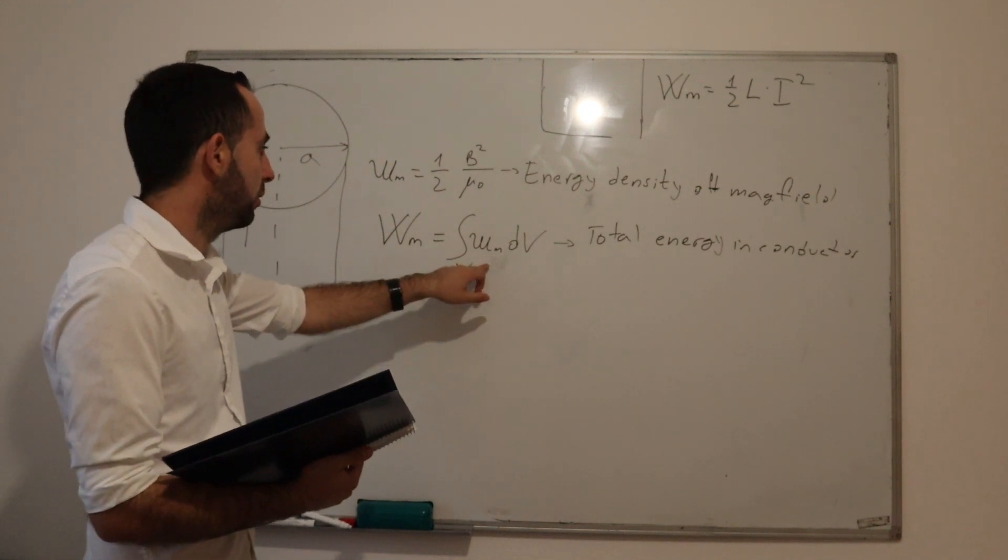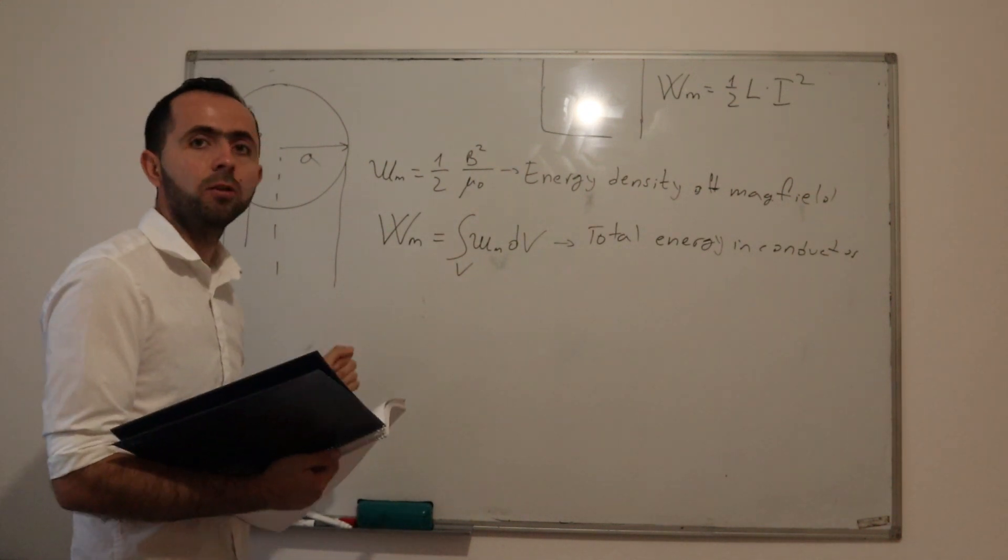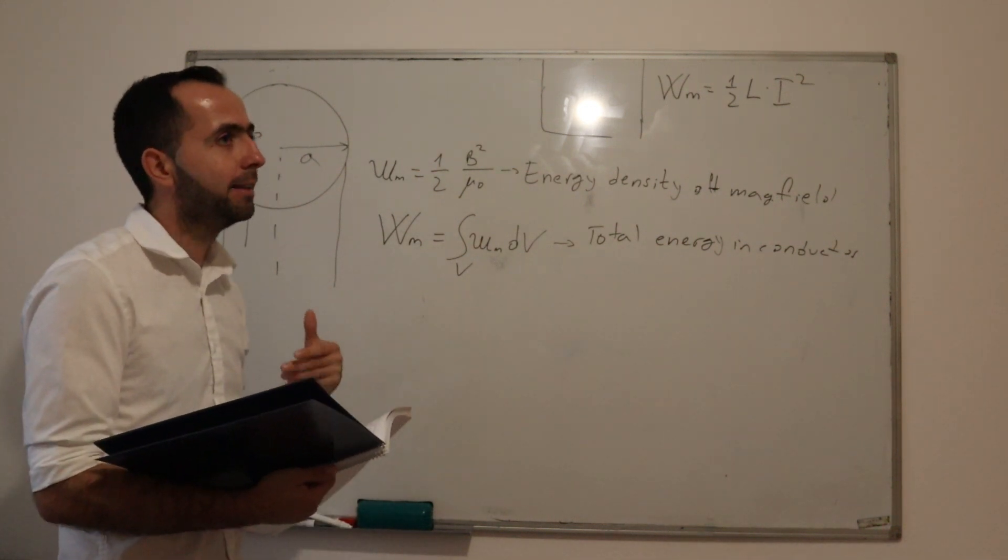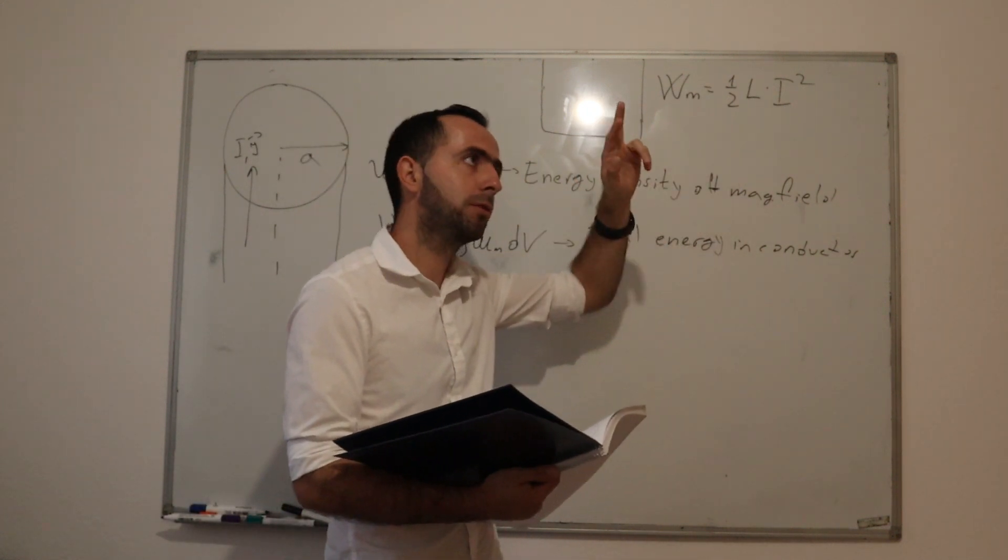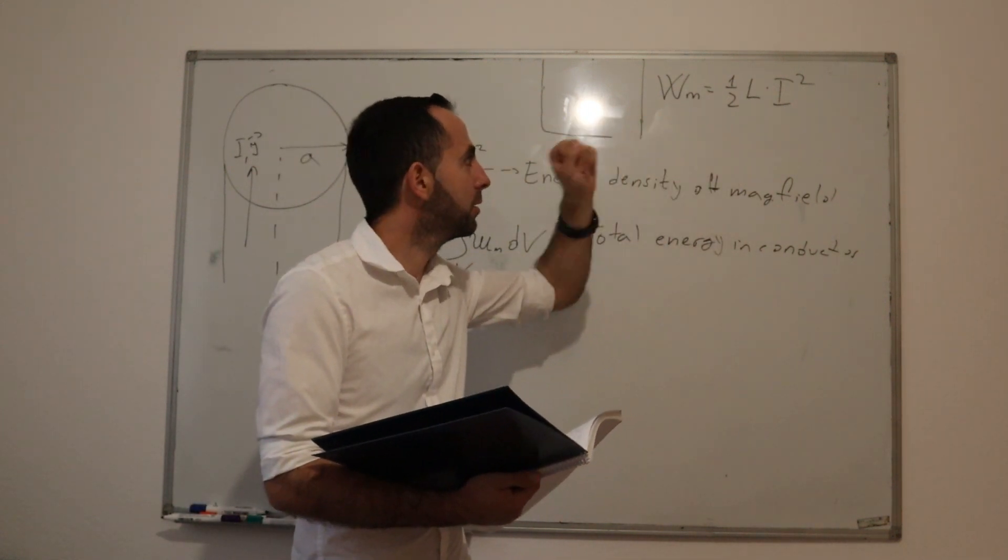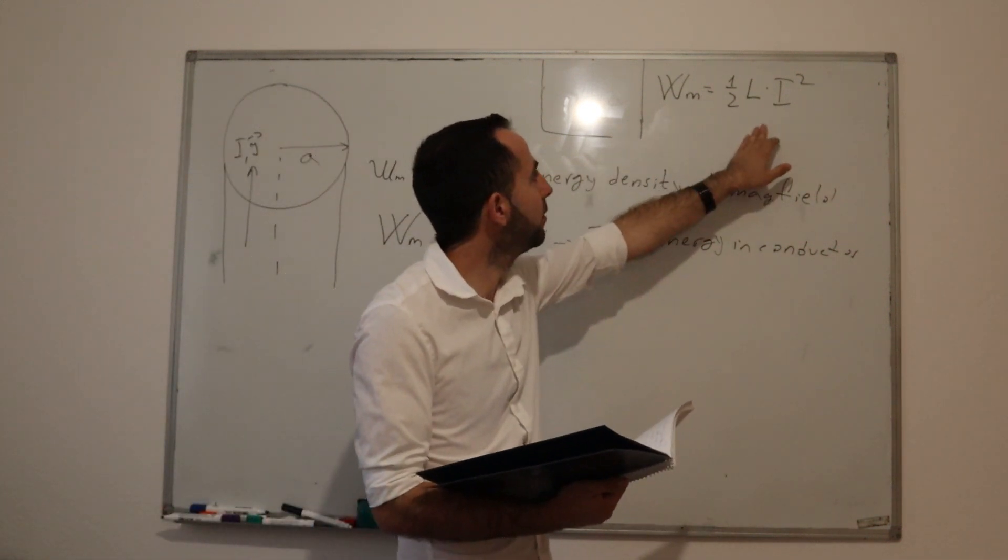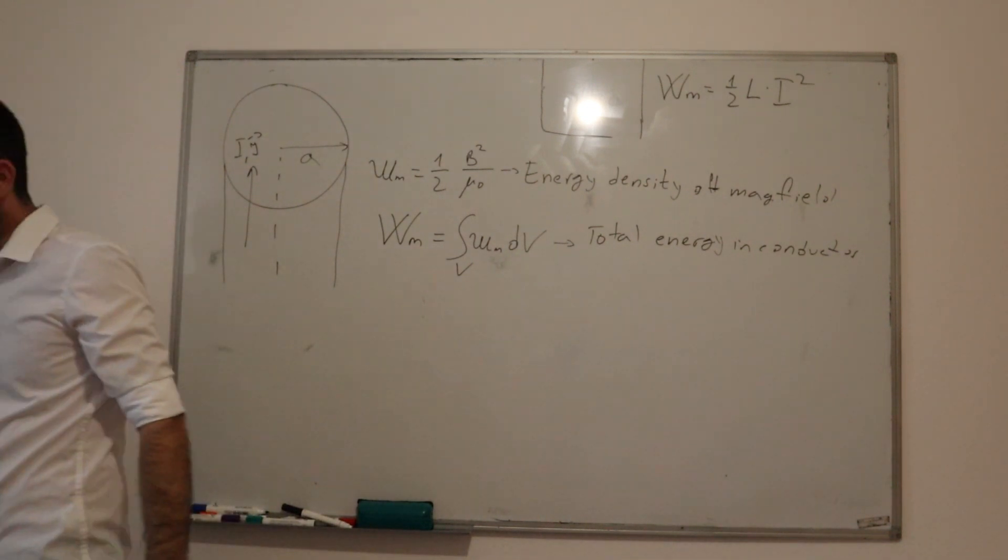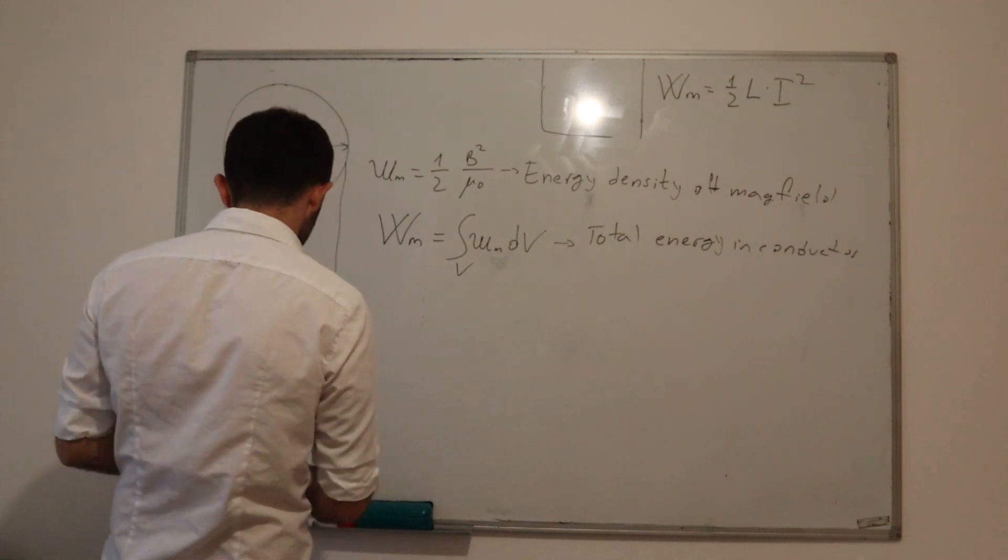When we put this volume integral, we will get the total energy of conductor. After we got total energy of conductor, we can find its inductance, its own inductance, not the inductance between two conductors. Here is how you calculate inductance of a conductor, using this formula. So first, we will find our B. How do we find our B? We found it using Ampere's law.